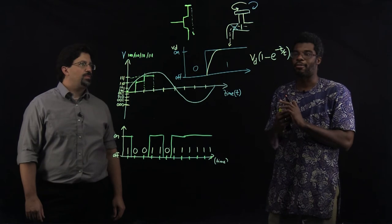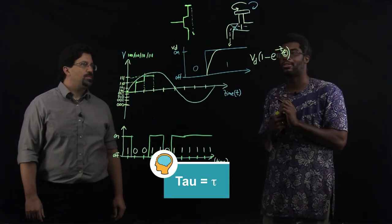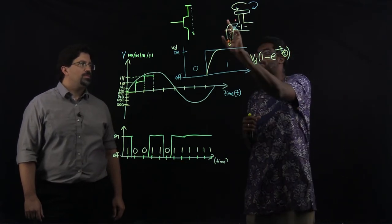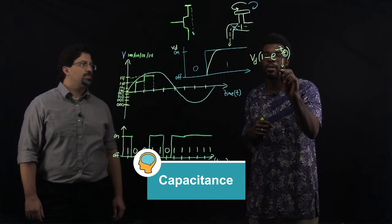And what controls how fast that is, is this part of the equation that is tau. Tau is actually related to a physical quantity of the transistor called the capacitance. And that we use the letter C to represent.